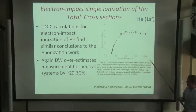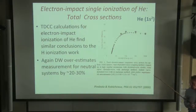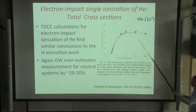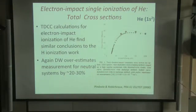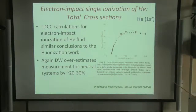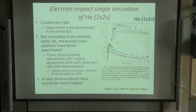For neutral helium, the TDCC calculations were also in good agreement with measurement. Again, the distorted wave overestimated the total cross-section by about 30%, and other calculations such as CCC have also done a very accurate job for helium.